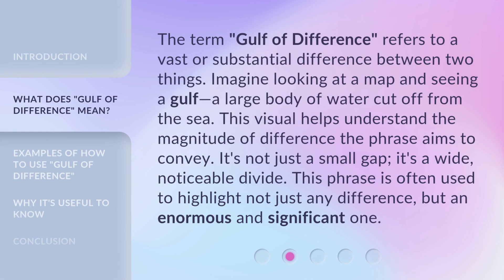The term 'Gulf of Difference' refers to a vast or substantial difference between two things. Imagine looking at a map and seeing a gulf — a large body of water cut off from the sea. This visual helps understand the magnitude of difference the phrase aims to convey. It's not just a small gap; it's a wide, noticeable divide. This phrase is often used to highlight not just any difference, but an enormous and significant one.